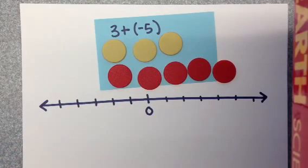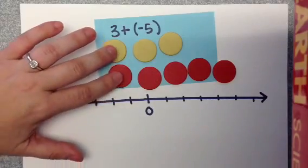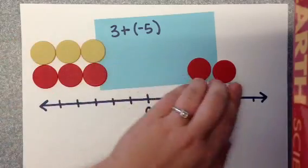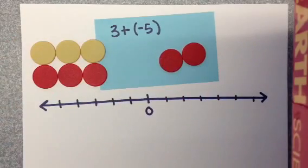When you do that, you want to talk about how 1 positive and 1 negative together make a 0. So we would take out our 0 pairs, and we'd end up with a total of negative 2.